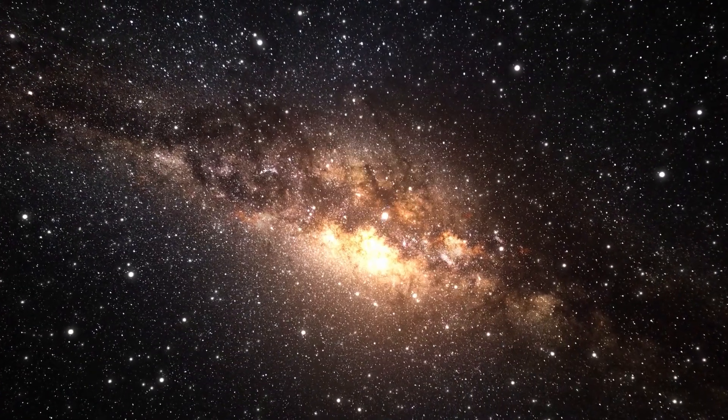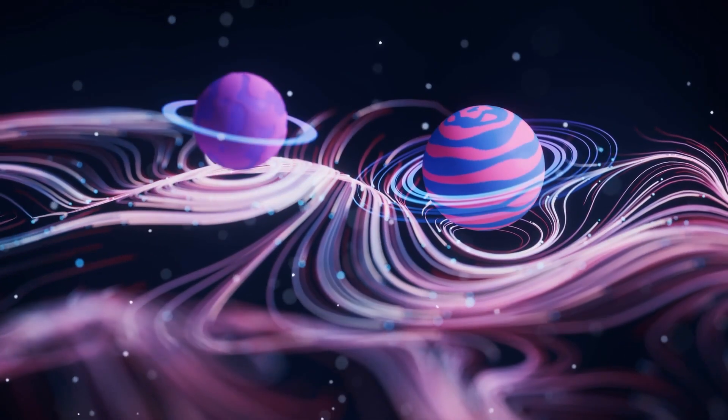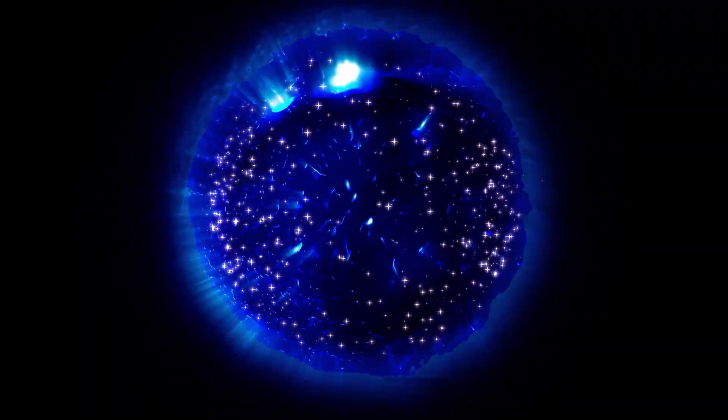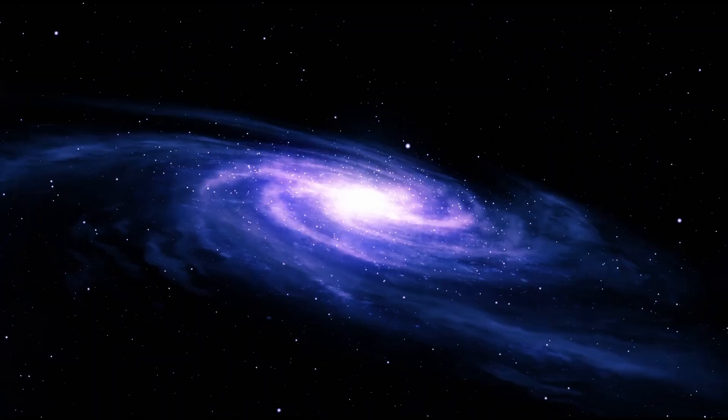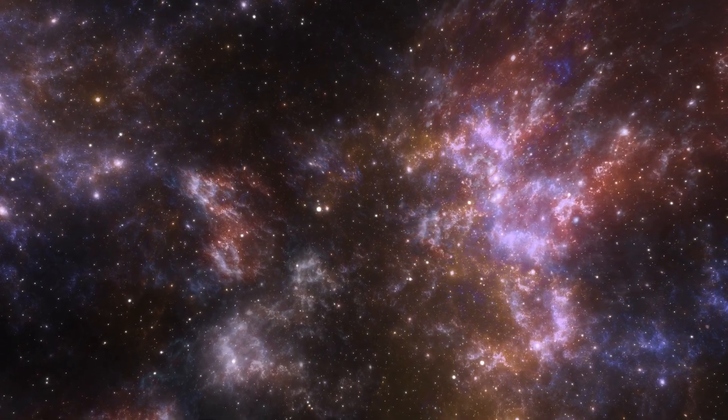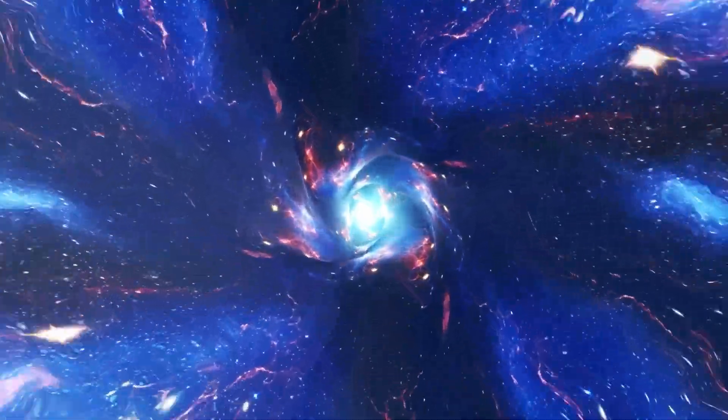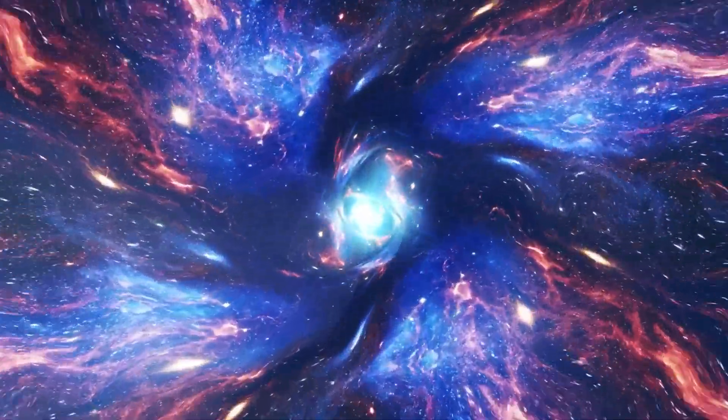The general theory of relativity explains how space and time interact with matter and energy. However, space itself cannot be directly observed. It can only be studied through its influence on objects, light, and other forms of radiation. As the universe expands, the volume occupied by matter increases, but its total amount remains the same. As a result, the density of matter decreases, and the structure of the cosmos continues to change.